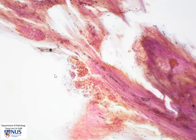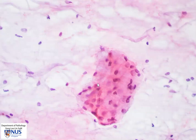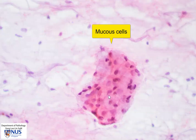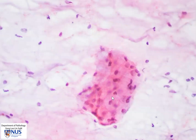It is because of the hypocellularity that this may potentially be mistaken for a mucocele or other non-neoplastic lesion. At high magnification, we can see a cohesive sheet of mucus cells. These cells, if occurring singly, can closely resemble macrophages, but we can see that they are cohesive.